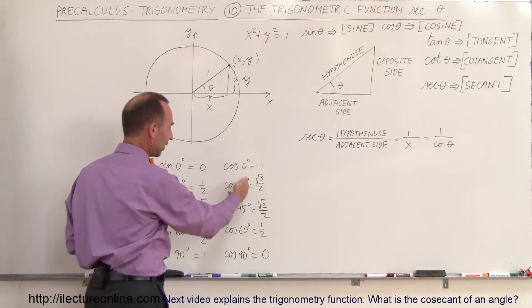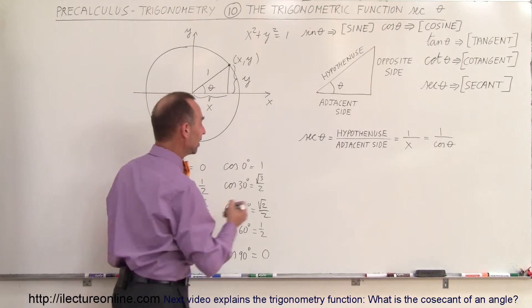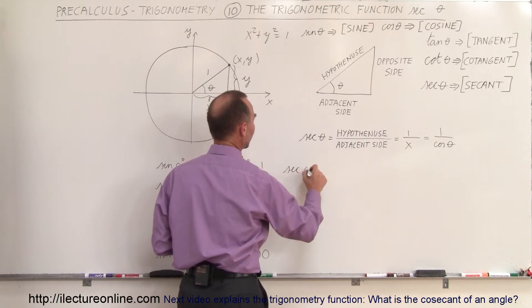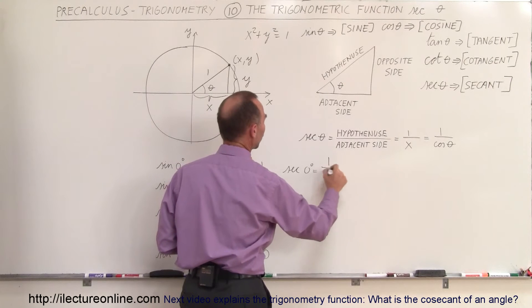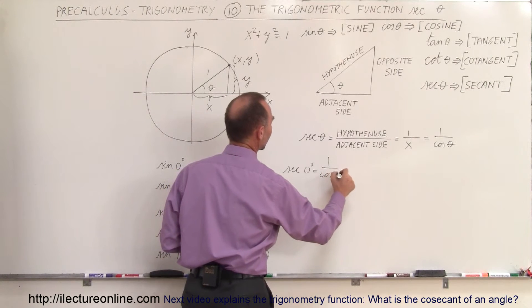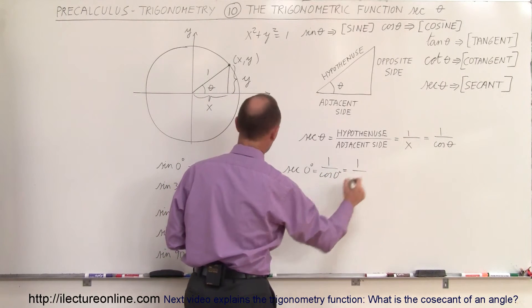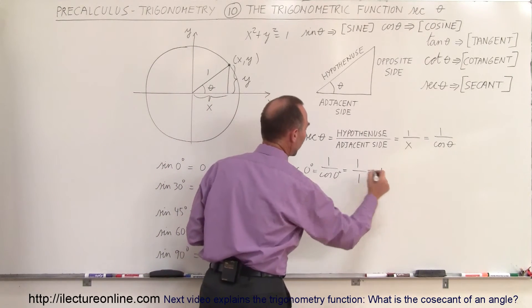Since we have the cosine of theta, we can see that the secant of 0 degrees is equal to 1 over the cosine of 0 degrees, which is equal to 1 divided by 1, which equals 1.